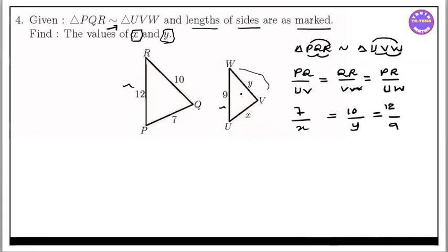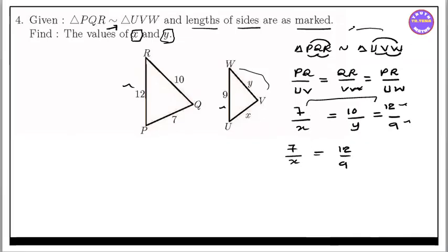So 7 by x is equal to 12 by 9. Cross multiplying: 4x — so x equal to 3. Actually: 7 times 9 equals 12 times x, giving x equal to 63 divided by 12, which simplifies — x equals 21 by 4.